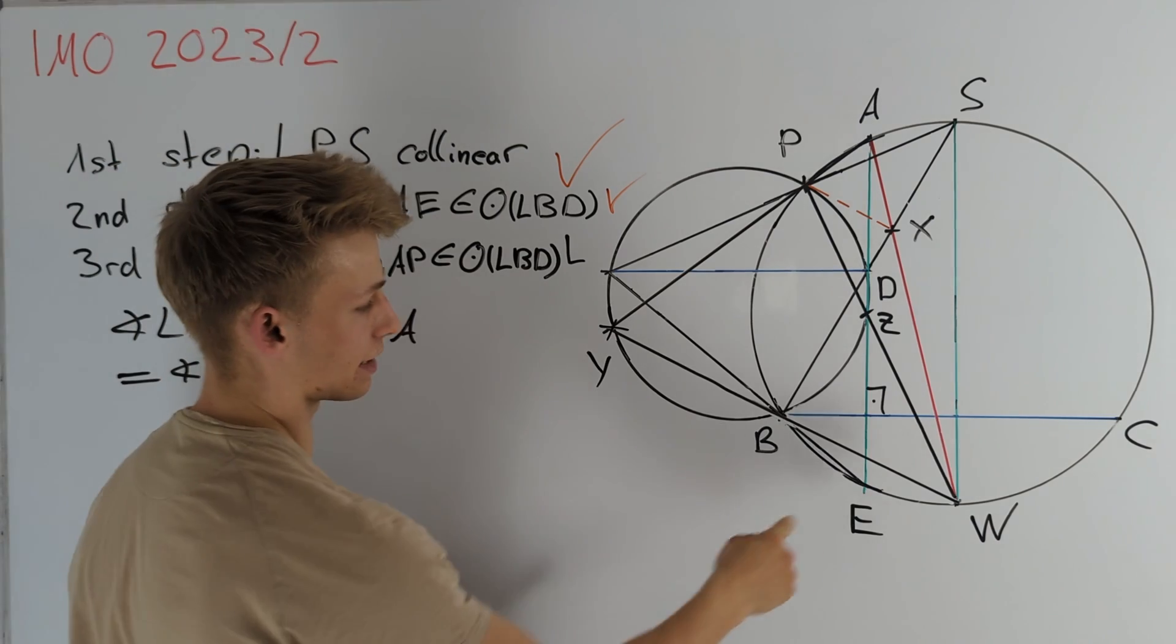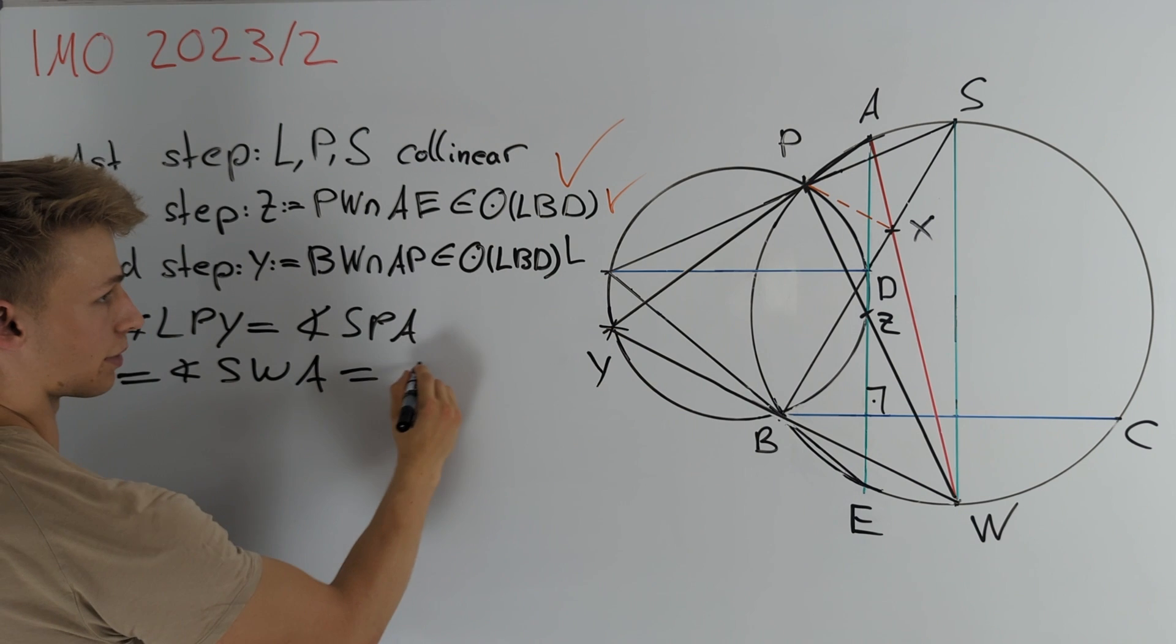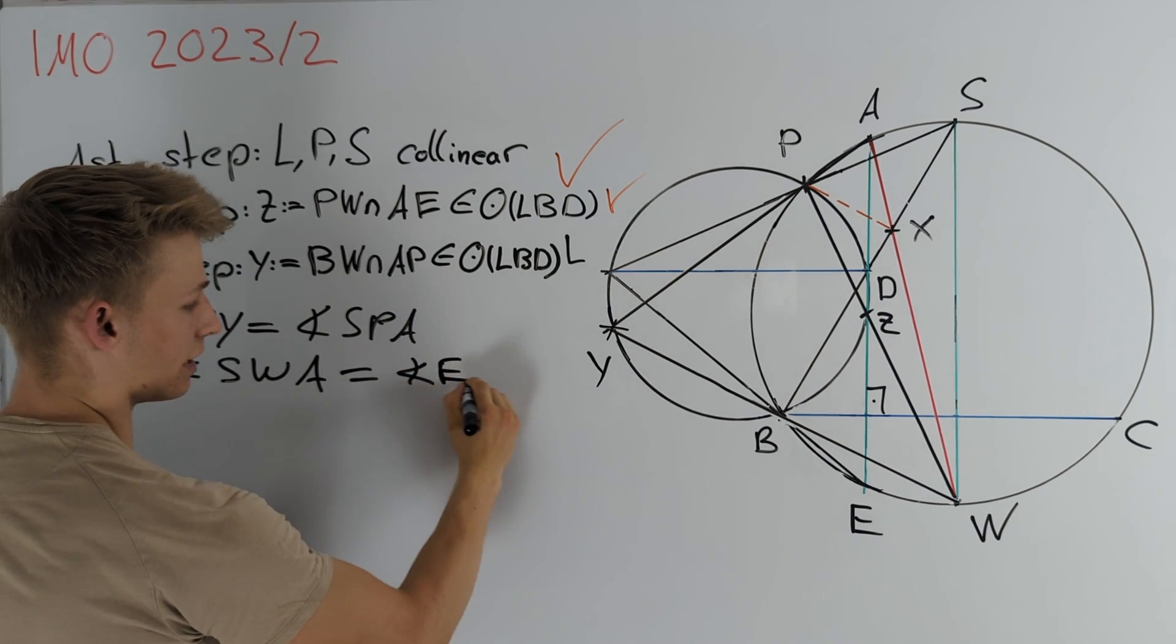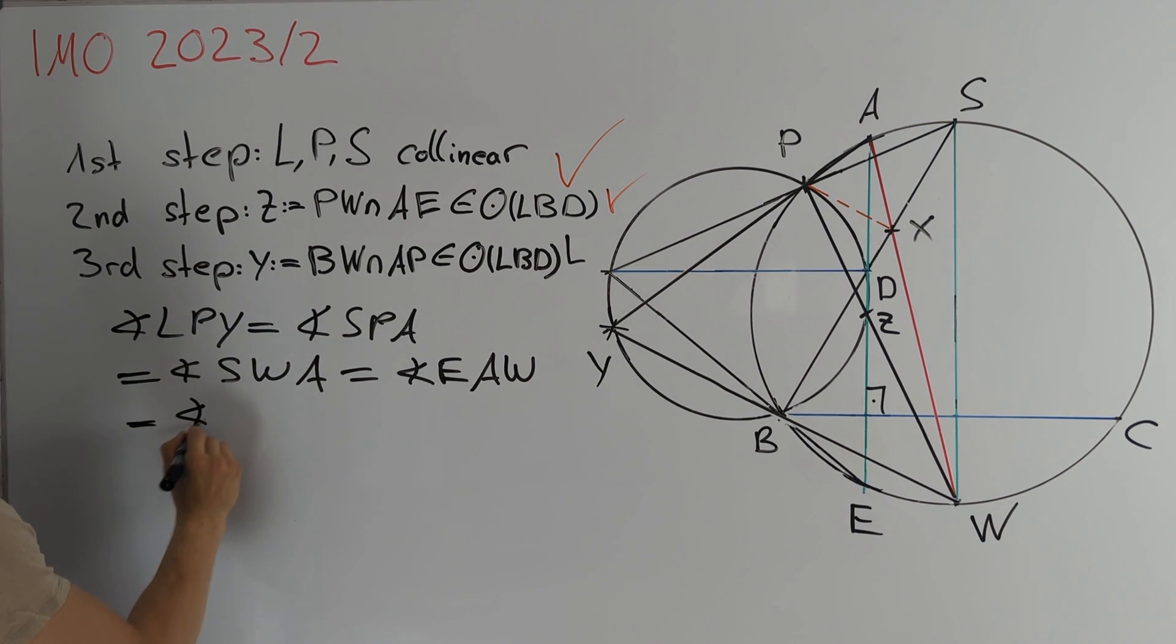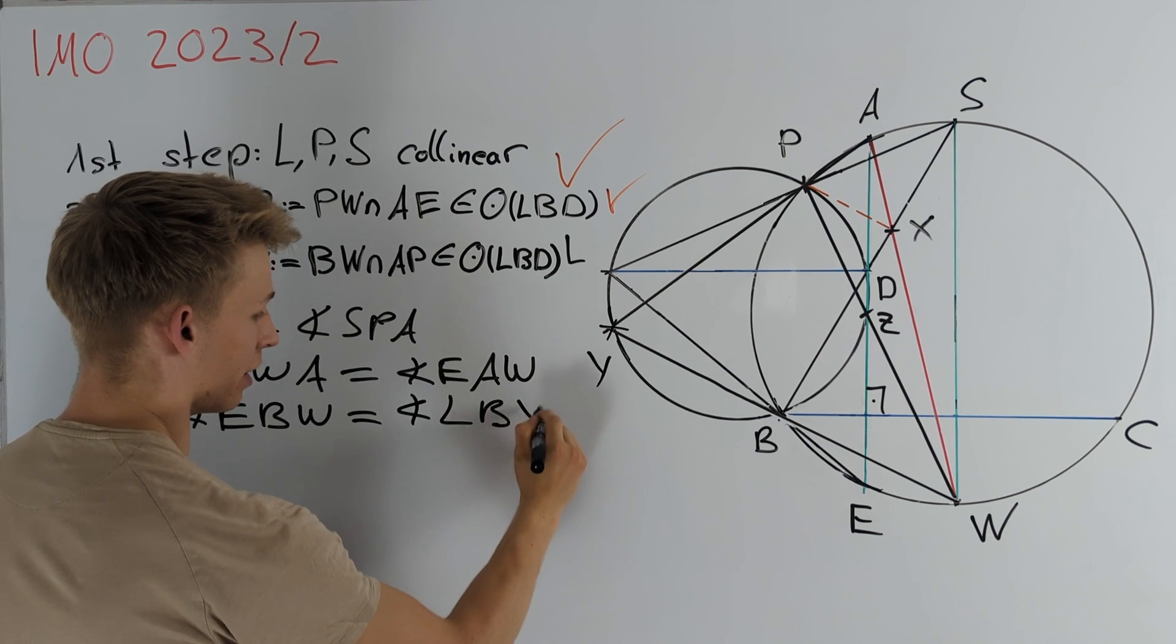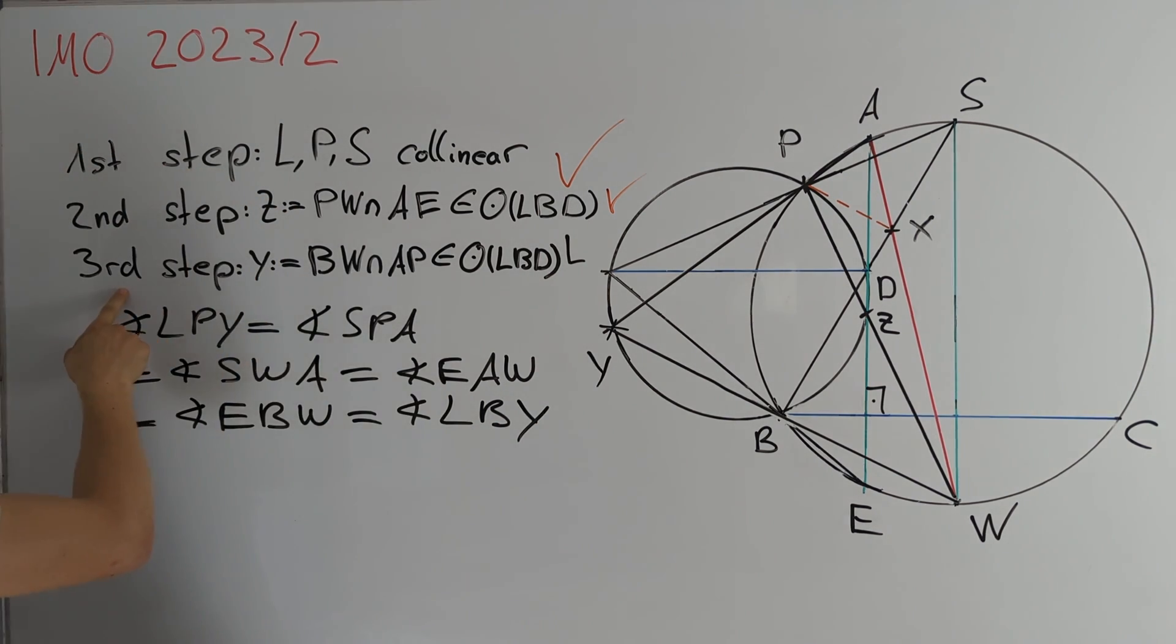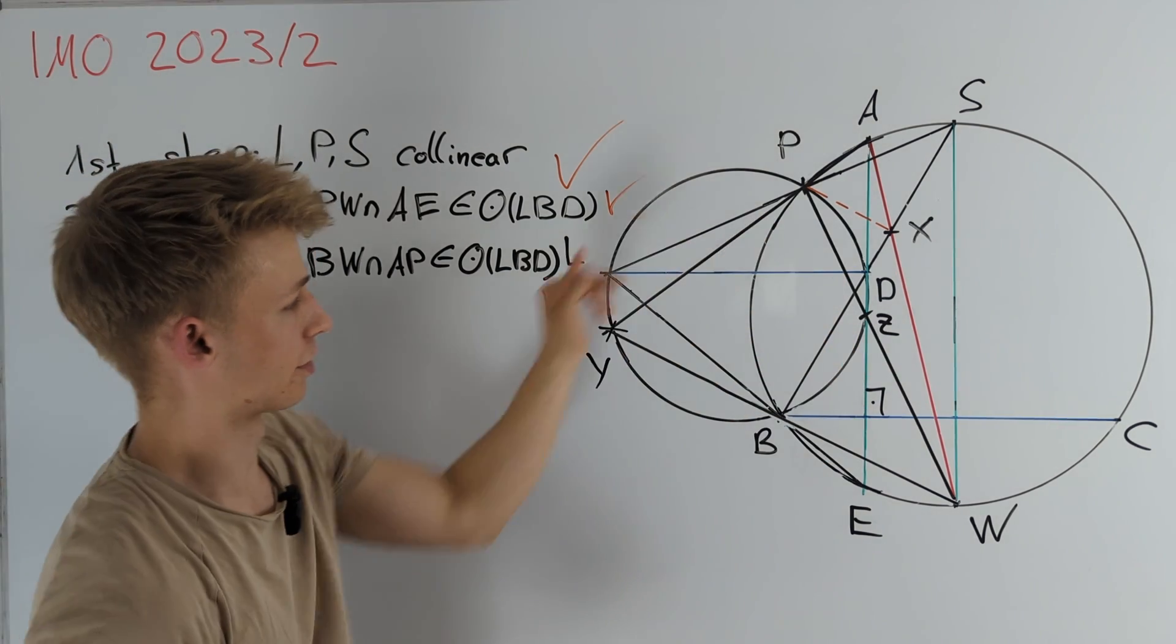And now we can use again the fact that these two green lines here are parallel to get that this is equal to the angle EAW or the angle EBW and now finally we get that the angle EBW is equal to the angle LBY which also proves our third step. After these three steps here we found a lot of points on this circle.